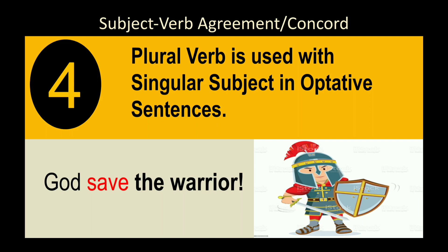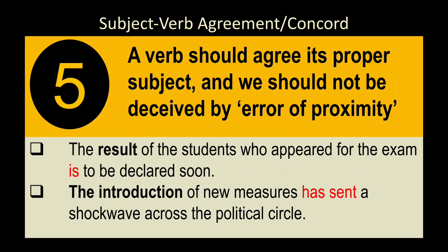Rule 4: In optative sentences (expressing a wish or prayer), we use plural verb with a singular subject. For example, 'Man proposes, God disposes' uses 'disposes' (singular). But in 'God save the warrior' or 'May God save the warrior,' which is an optative sentence, the verb is in plural form — we say 'save,' not 'saves.'